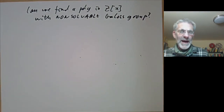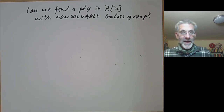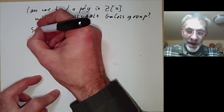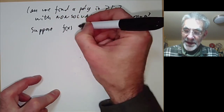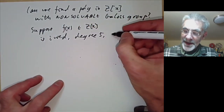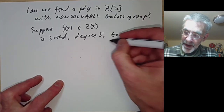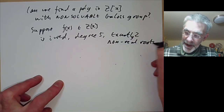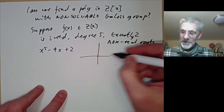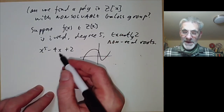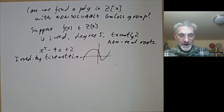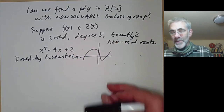Normally working out the Galois group of a polynomial of degree 5 is a real pain, but there's a rather easy trick for finding examples with Galois group S5. Suppose the polynomial f(x), working over the integers, is irreducible of degree 5 and has exactly two non-real roots. It's easier to find examples of such polynomials — for instance x to the 5 minus 4x plus 2. You can easily check that its graph has exactly three real roots. It's irreducible by Eisenstein.